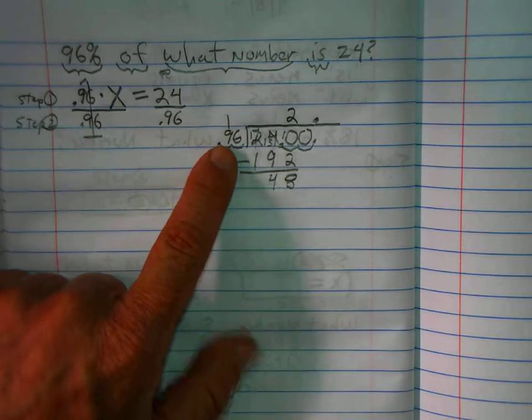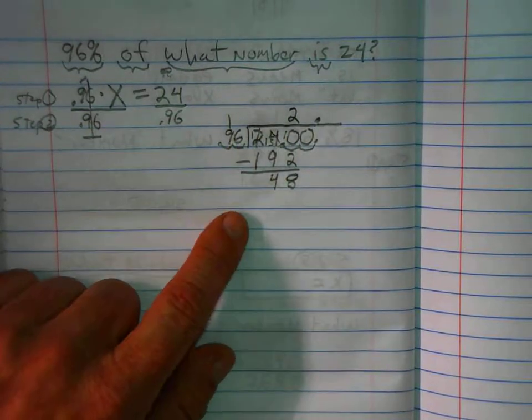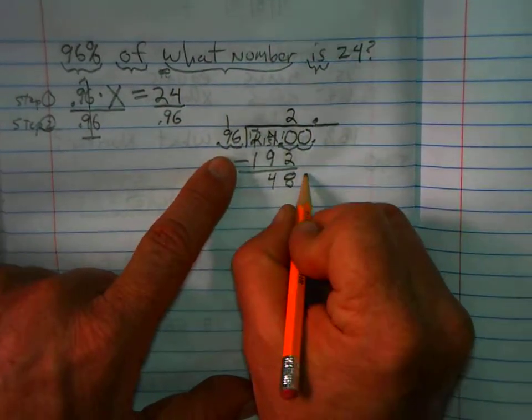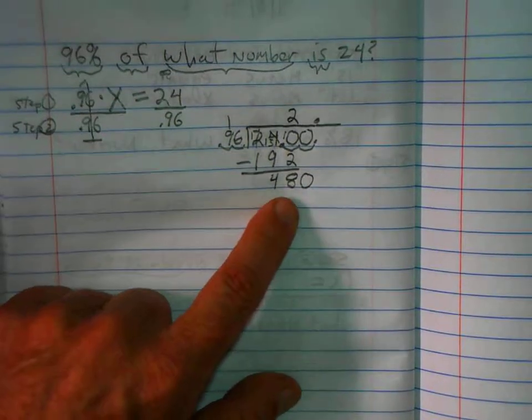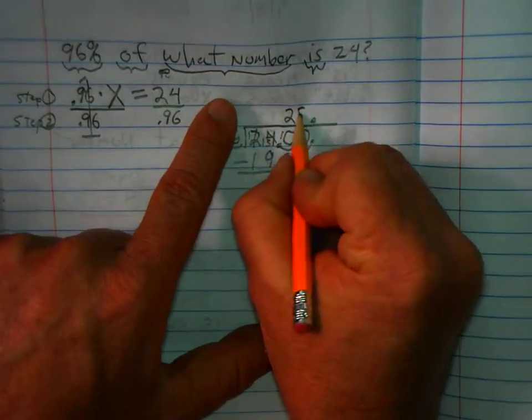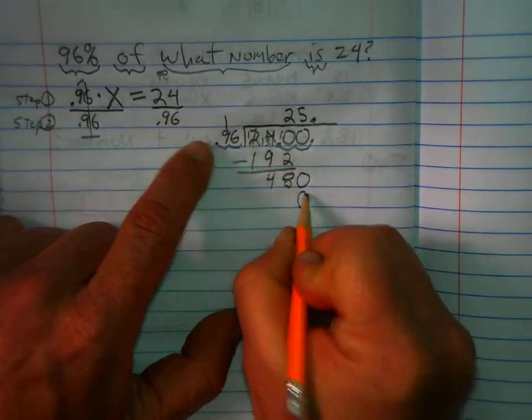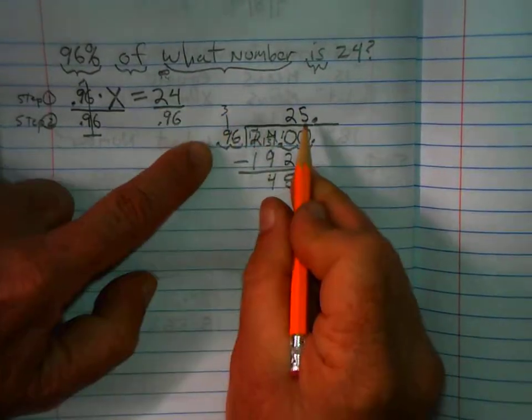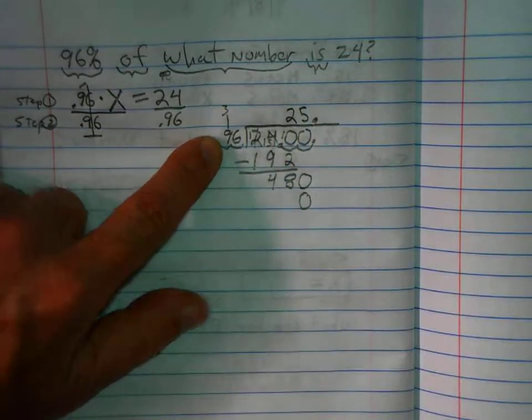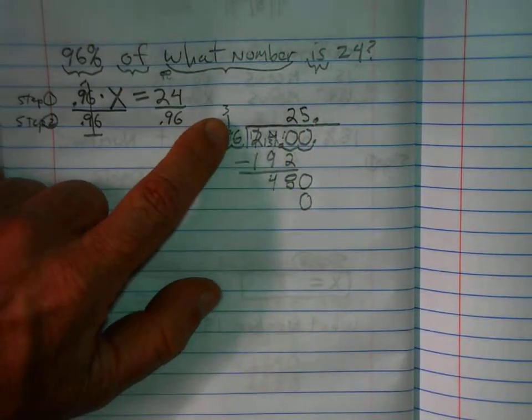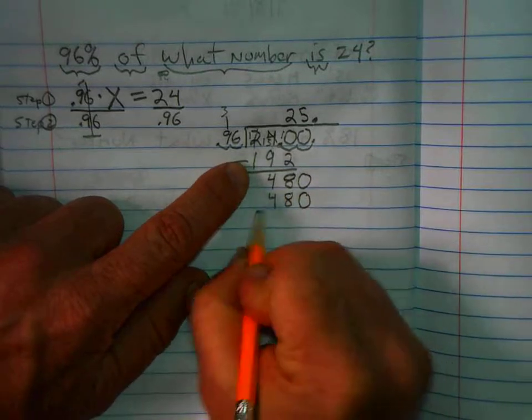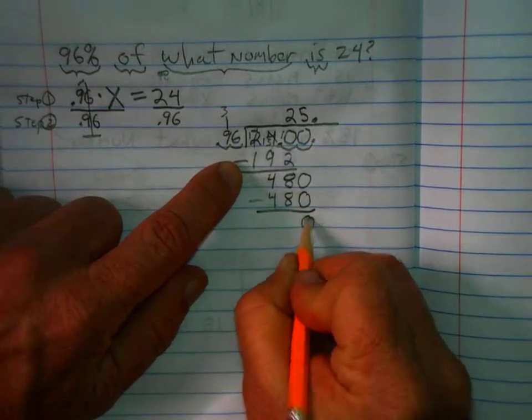Forty-eight is less than 96. I've gone in the correct number of times. I bring down the zero. 96 goes into 480 five times. Five times six is 30. Carry the three. Five times nine is 45. Plus three is 48. I subtract. I have zero left over. So that's step two.